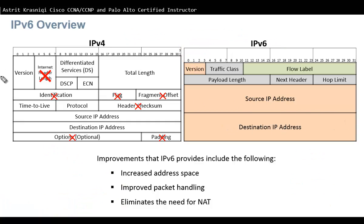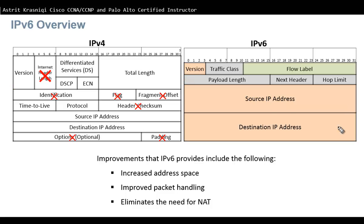Now let's go through the fields. The first field is the same in both: the Version field. In binary, IPv4 is 0100, which represents four, and IPv6 is 0110, which represents six — identifying the packet as IPv6.